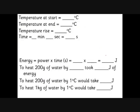Now we do a calculation. We measure the temperature at the start — it's 23 degrees C. We heated it up by 10 degrees C so it's 33 degrees at the end, a temperature rise of 10 degrees C. We measure the time: let's say it took 4 minutes and 24 seconds, which we need to convert to seconds. That's 4 lots of 60, so 240 plus 24 gives us 264 seconds.